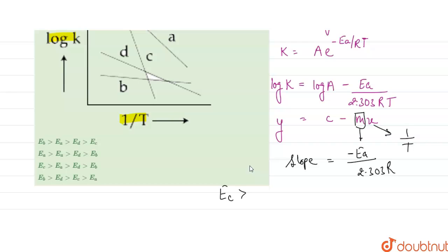Now for A, the slope is low, so the activation energy of A will be next high. And similarly, D and B. C, A, D, B. So if we see the options, option 3 is the correct answer.